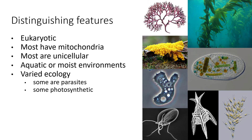Protists are the first group of eukaryotic organisms. They're kind of the evolutionary link between the prokaryotes and the eukaryotes. The evidence seems to indicate that the archaea are more closely related to the eukaryotes than bacteria are, but either way, one of the groups of protists were the first eukaryotic organisms to evolve.